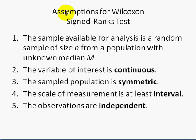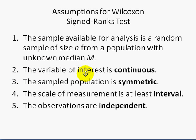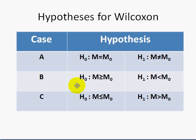The assumptions for the Wilcoxon Signed Rank Test are: 1. The sample available for analysis is a random sample of size N from a population with unknown median M. 2. The variable of interest is continuous. 3. The sample population is symmetric. 4. The scale of measurement is at least interval, and lastly, the observations are independent.